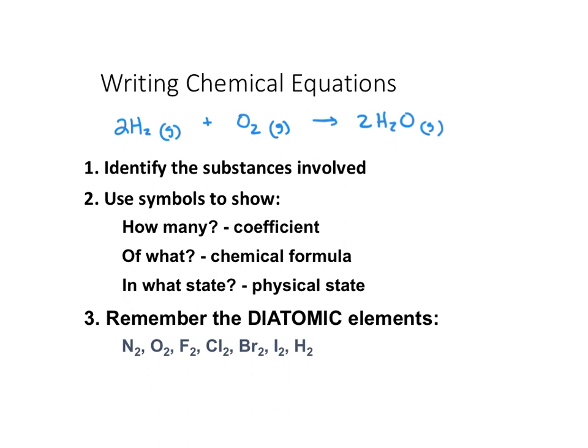Next, we're going to use symbols to show various things. We use coefficients to indicate how many of a substance — so a '2' here tells us we have two atoms or two molecules of that substance. Coefficients indicate the numerical amount in terms of how many molecules or atoms are present. The chemical formulas written tell us what's a reactant and what's a product.